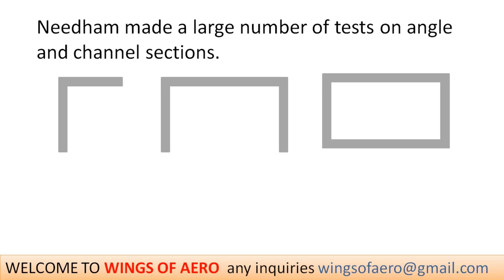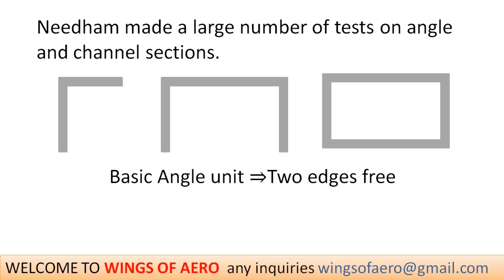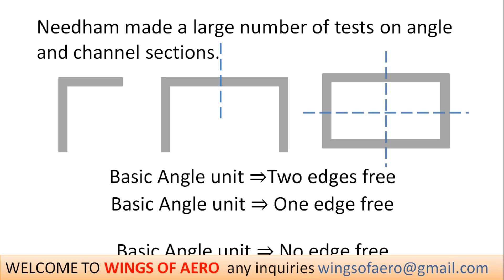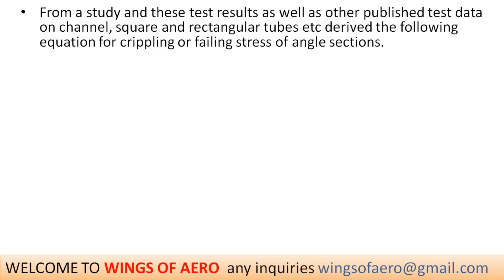As you can see, there are a few sections shown. In the angle section, we have two free edges. In the channel section, if we cut from the middle to make two angle sections, each basic angle unit has only one free edge. For the square element, if we cut it we get four angle sections, and in each of those four angle sections we have no free edges.